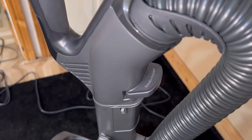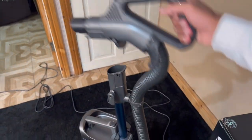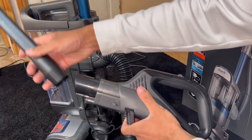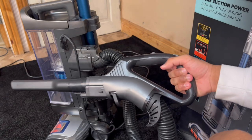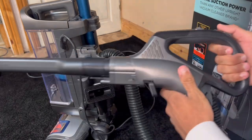Right here you've got the handle release. What that does is it allows you to remove the hose like so, and then attach your desired tool of choice for cleaning in handheld mode with the hose. Listen to the power of this thing.